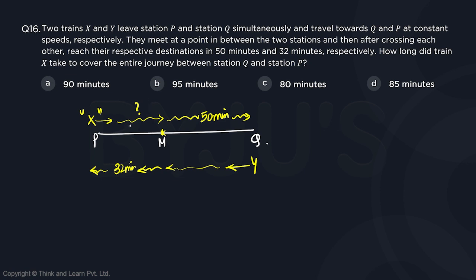Well, if X took T time to go from P to M, Y also must have taken T time to go from Q to M because they started simultaneously and they are going to meet. So whenever two bodies start simultaneously and they meet in opposite direction, time is always constant.